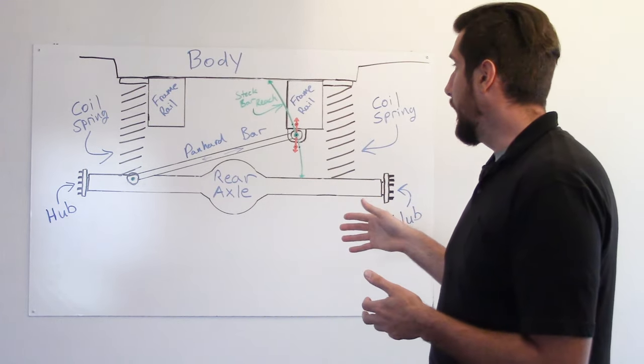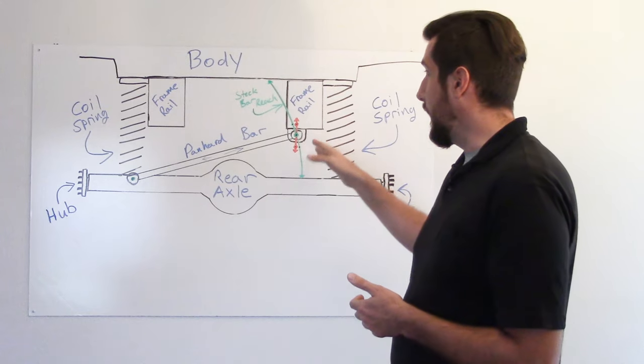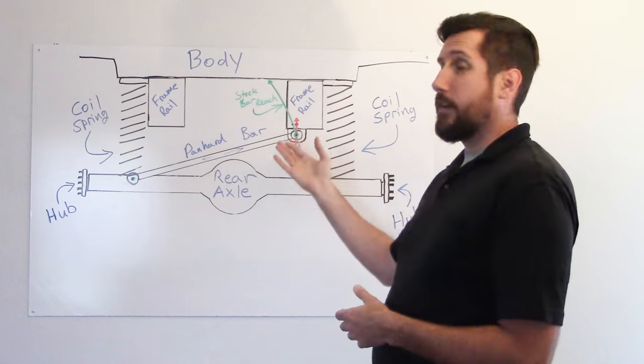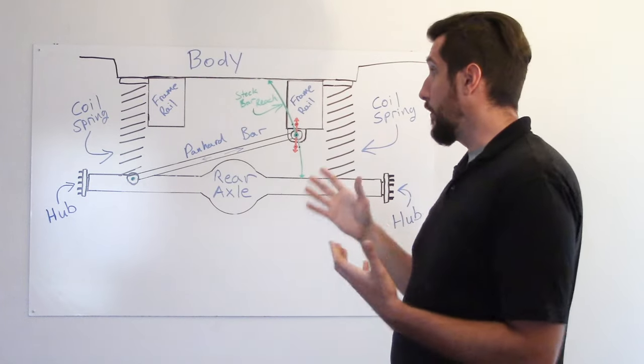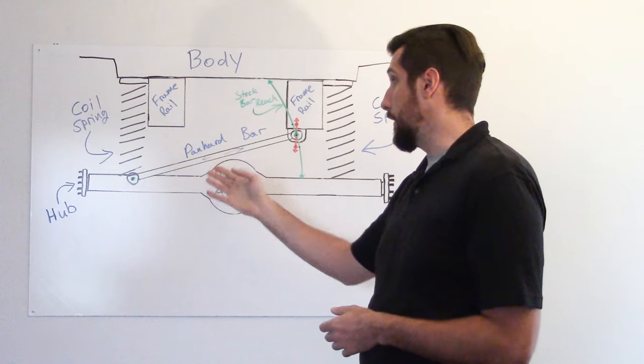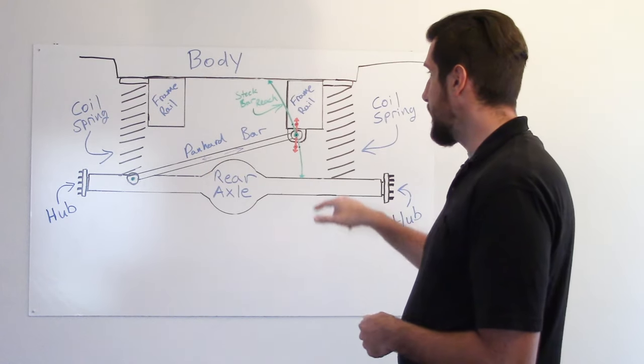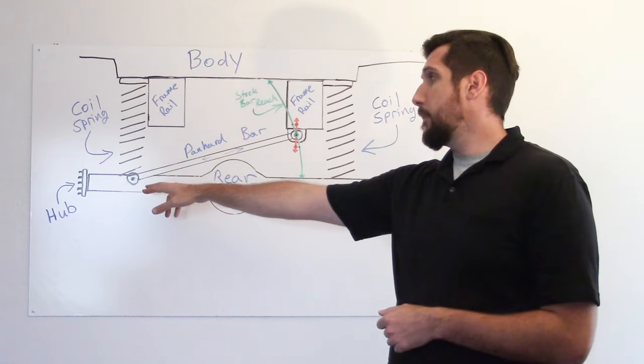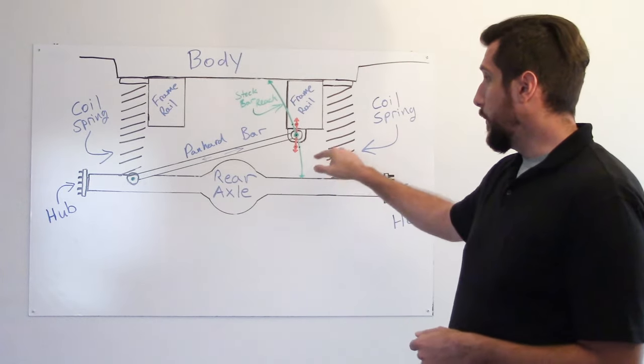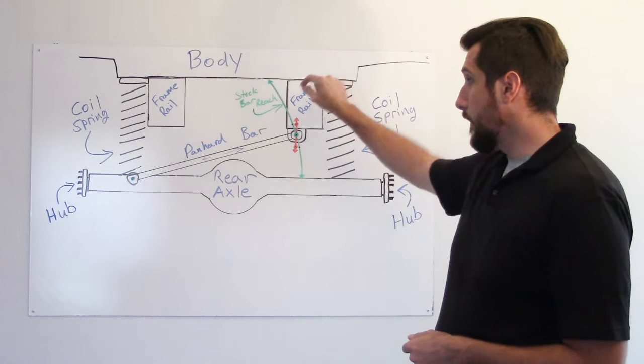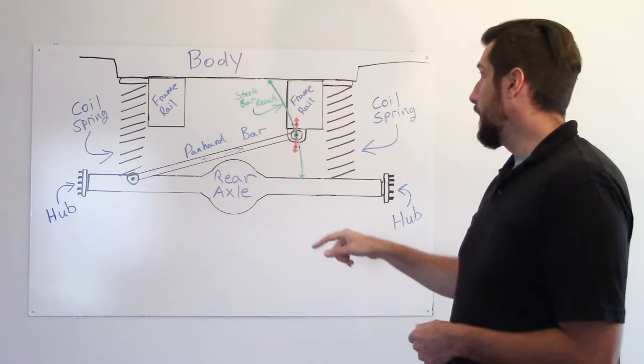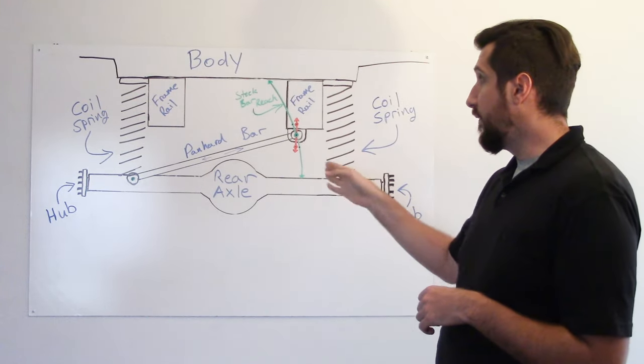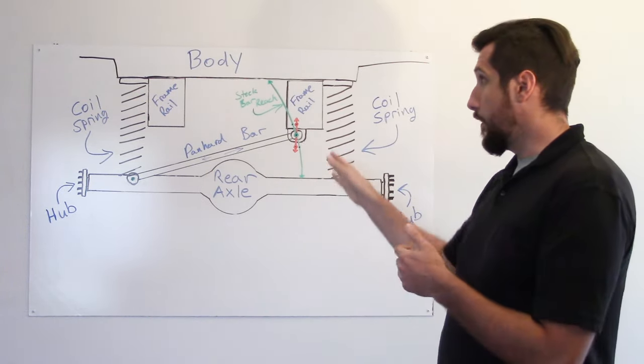And to try to explain that, I've drawn this green line and this red line. The green line is the stock bar reach. So when we're talking about bar, we're talking about the panhard bar. If you can imagine that we take the bolt out where the panhard bar mounts to the frame rail, but leave the bolt in on the axle, and then we just lift the end of the bar up and down and pivot it on that point, this green line is the route that the mounting hole in the panhard bar will follow. It's going to go on an arch like that.